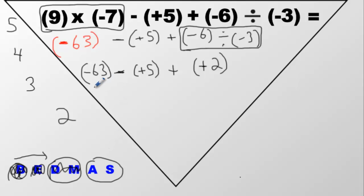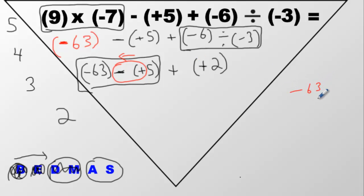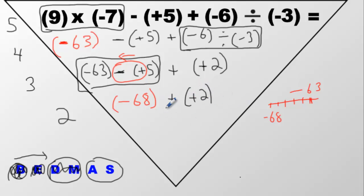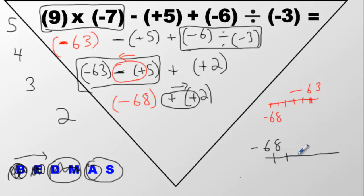The only thing remaining is addition and subtraction — whichever one comes first, you do first. Subtraction it is. What's negative 63 minus positive five? The signs are different, so we go left. Starting at negative 63 on the mental number line, going left five times: negative 64, 65, 66, 67, negative 68. Everything else falls down — positive two. Now we just have addition left. Signs are the same, so go to the right — negative 68, go right two times: negative 67, negative 66. That's the answer.